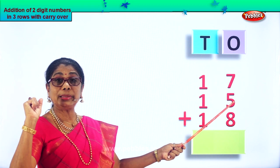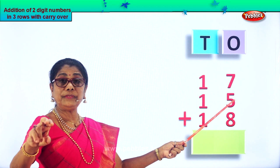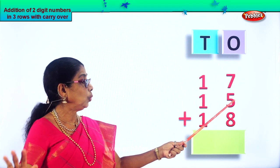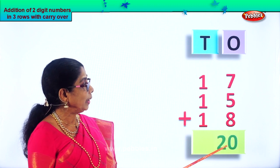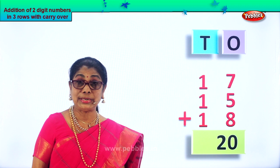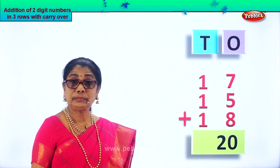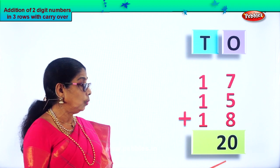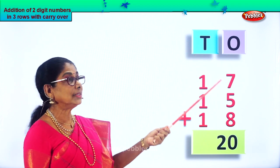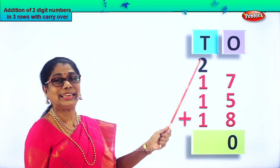Thirteen in the mind plus seven in your fingers: fourteen, fifteen, sixteen, seventeen, eighteen, nineteen, twenty. So we put twenty down. What is twenty? That is two tens. We put the zero here and carry the two over to the tens place. Twenty ones is two tens.